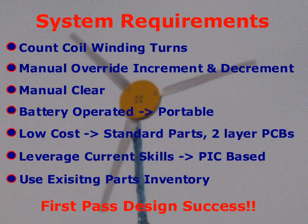The beginning of any project starts with defining system requirements. The technical requirements of this project are not difficult. 1. Count the coil wire turns as the coil is built. 2. Provide a manual override for incrementing and decrementing the count to adjust for human errors.